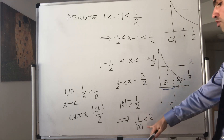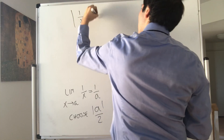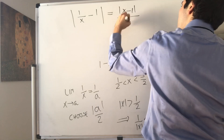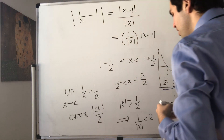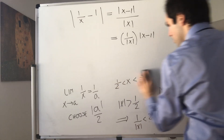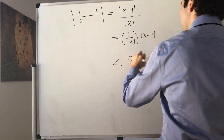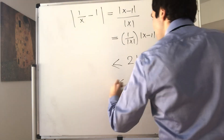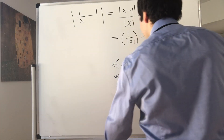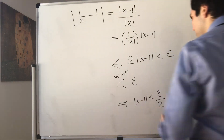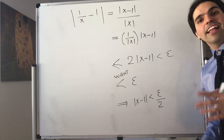Going back to the proof — step 2. Let epsilon be given, and let delta equal the minimum of 1/2 and epsilon/2. The 1/2 comes from our assumption that |x − 1| < 1/2, and epsilon/2 comes from the bound we derived. We take the minimum of those two to guarantee that both conditions hold simultaneously.